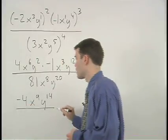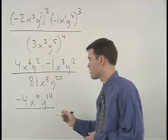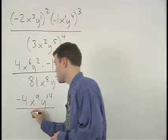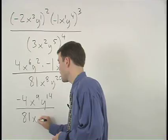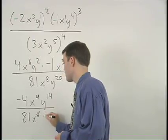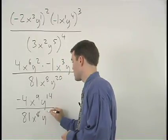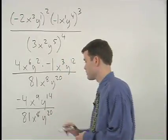So we have negative 4, x to the 9th, y to the 14th over 81, x to the 8th, y to the 20th.